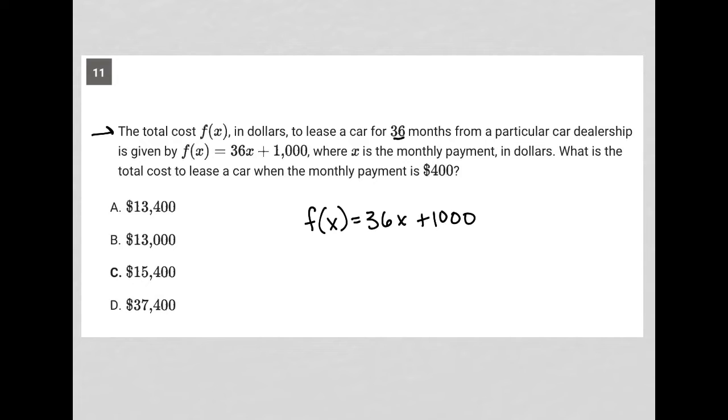That means we're paying for 36 months. If x represents the monthly payment, we have 36 of them in dollars. What is the total cost to lease a car when the monthly payment is $400?